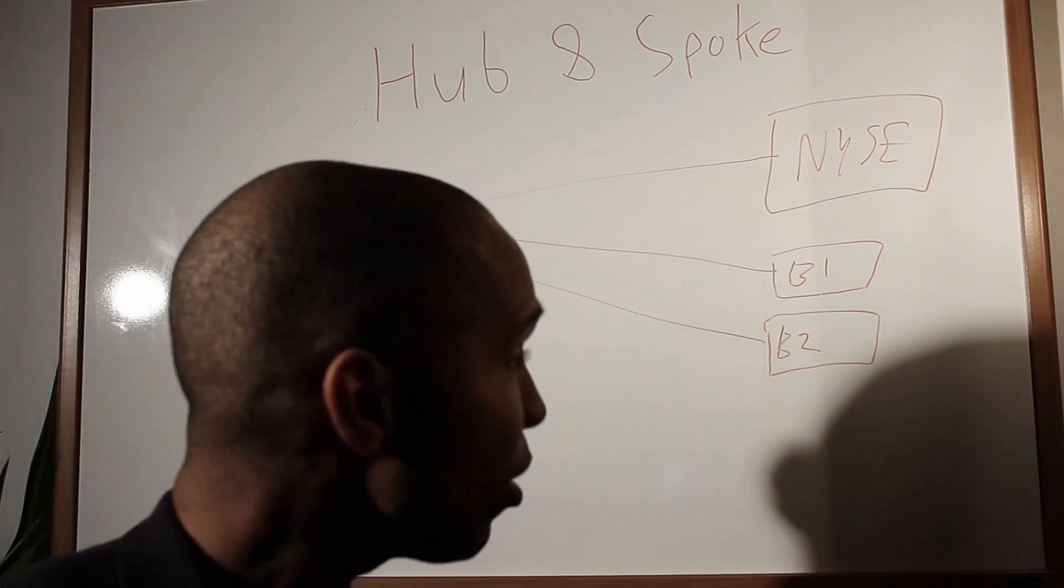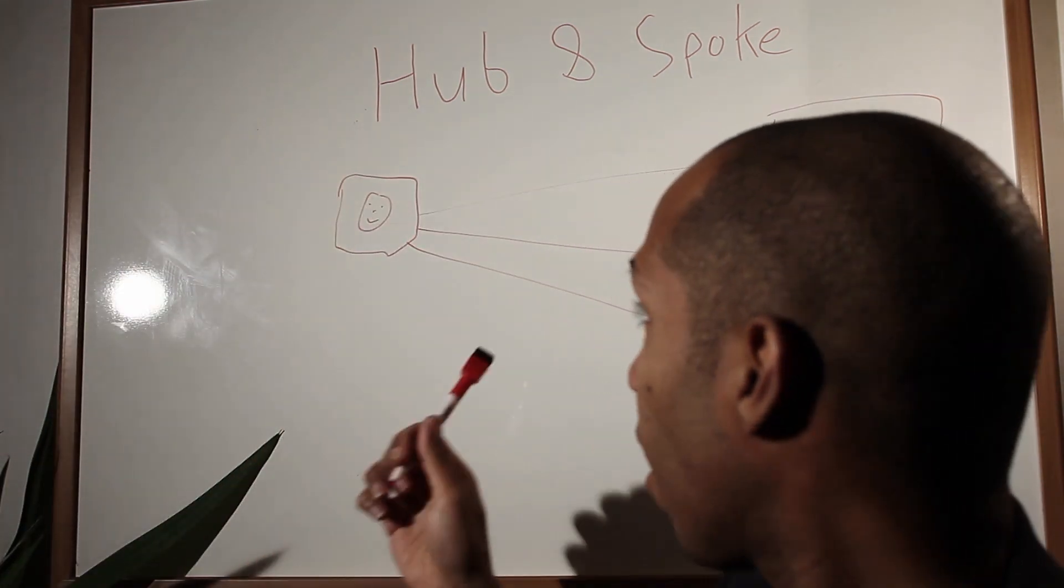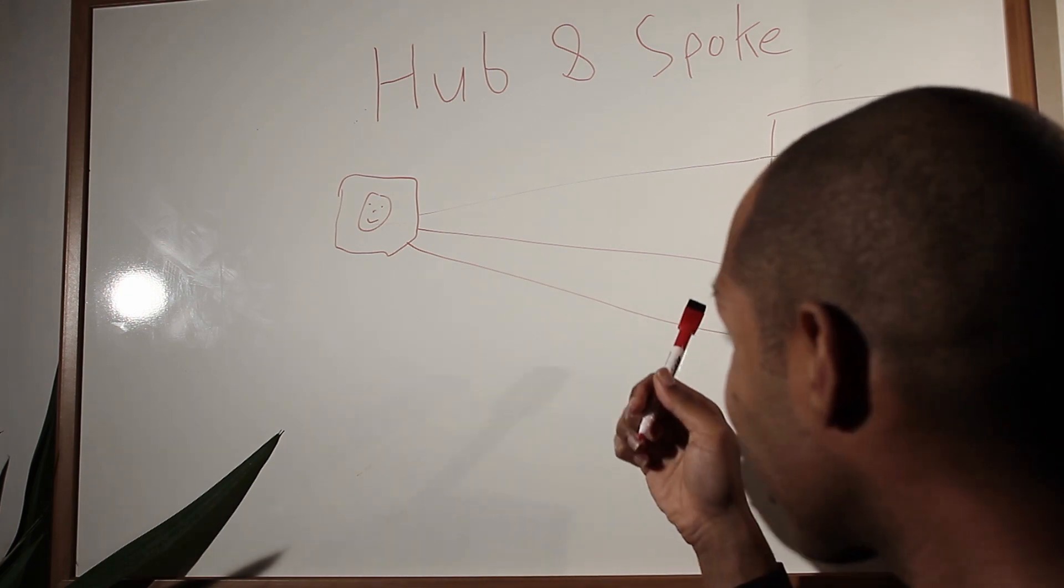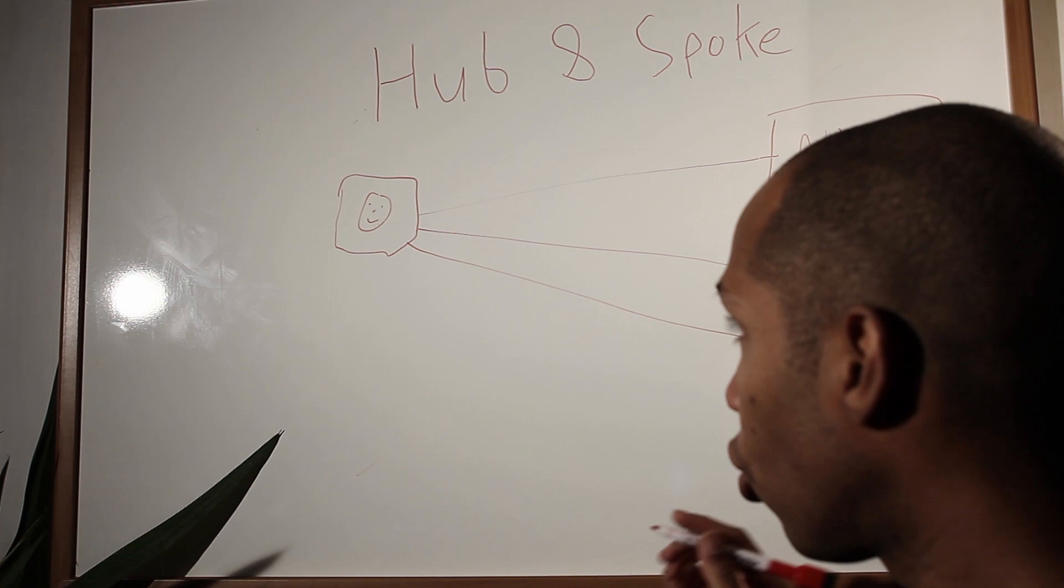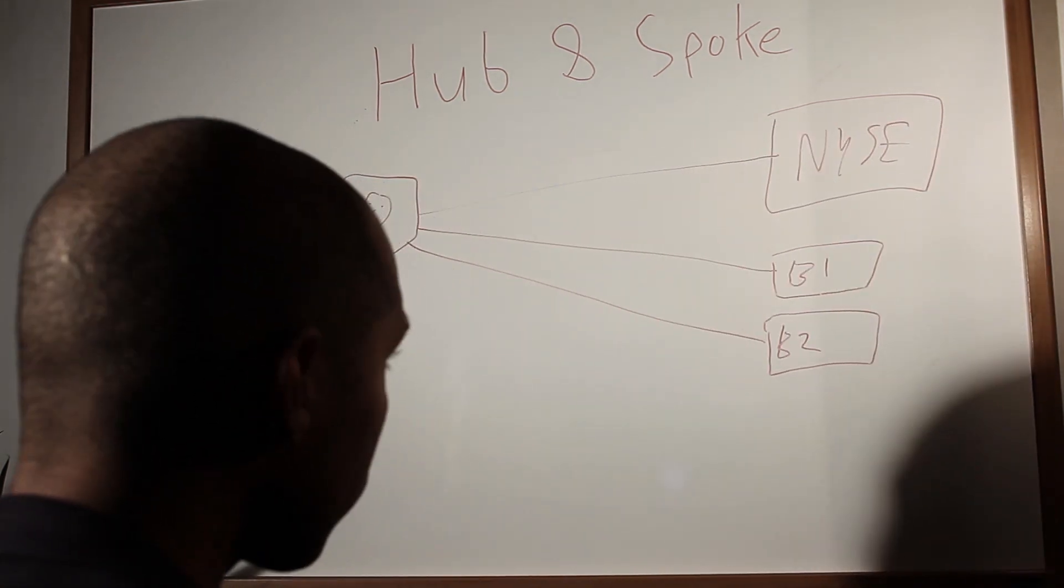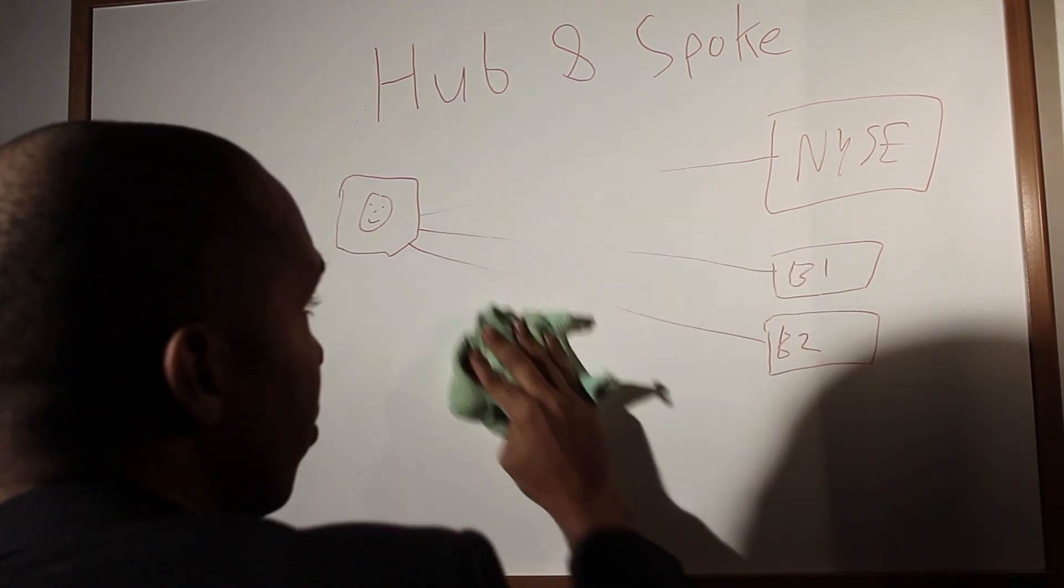So now you are running three separate connections. You have the responsibility of maintaining these connections, the expense of these connections. So that's a lot of stuff going on. And maybe that doesn't work for you. So what are your other options?